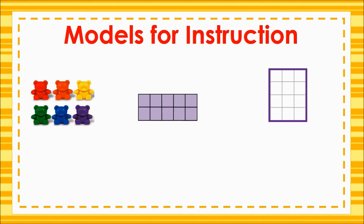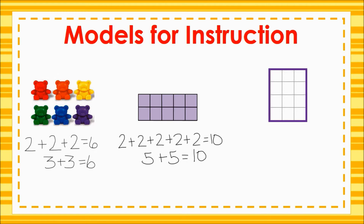Students should also be able to write equations with equal addends for each model. For instance, students can write 2 plus 2 plus 2 equals 6, or 3 plus 3 equals 6 for the first model. 2 plus 2 plus 2 plus 2 plus 2 equals 10, or 5 plus 5 equals 10 for the second model. And 3 plus 3 plus 3 plus 3 equals 12, or 4 plus 4 plus 4 equals 12 for the final model.